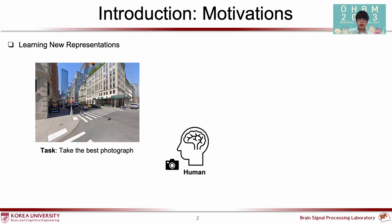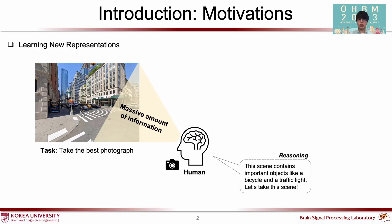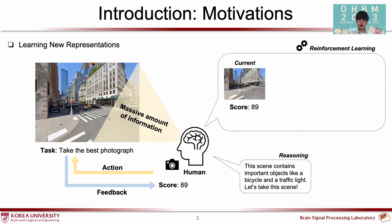Imagine performing a simple everyday task. A massive amount of information is fed into our brains. We reason for the given task, take action, and receive feedback. Given the feedback from the current step, we update our internal representations. However, do we have to utilize only the latest information?